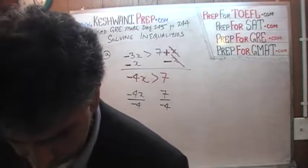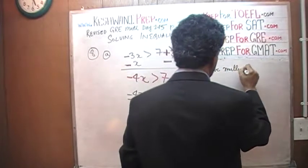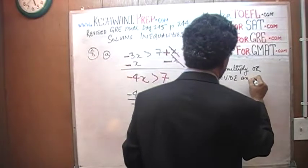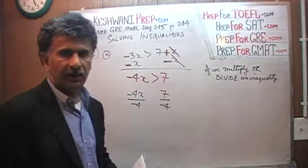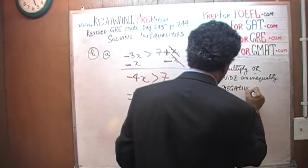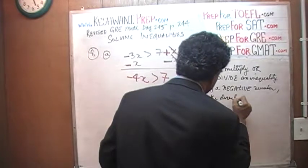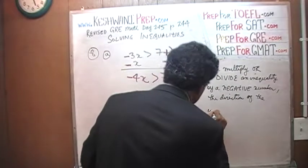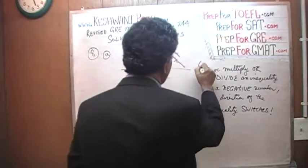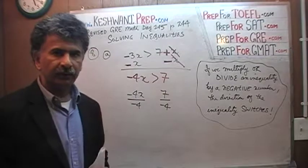But before we do that, let's talk about the exception. Here is the rule — here is what you have to remember: if we multiply or divide an inequality by a negative number, the direction of the inequality switches. That's it — that's what we have to remember. If you multiply or divide an inequality by a negative number, the direction of the inequality switches.